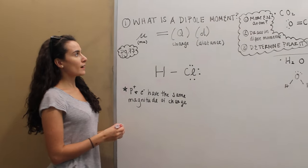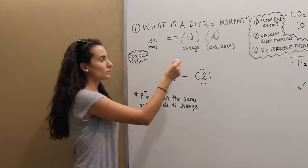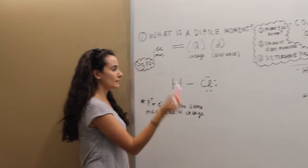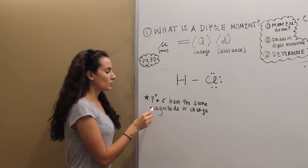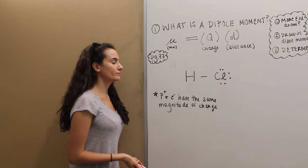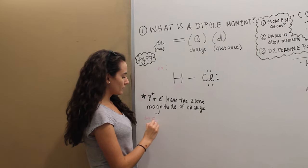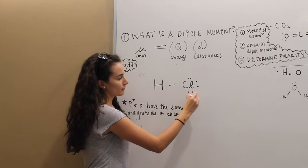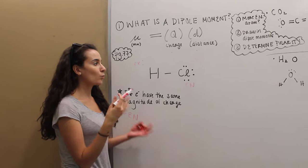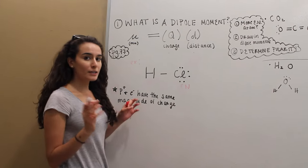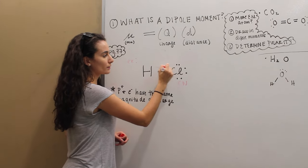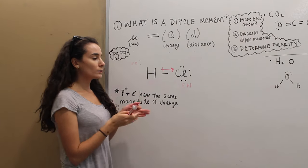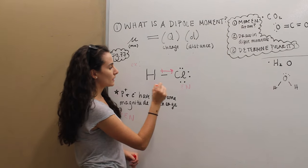On page 77 of our course reader, Dr. LaValle outlines a dipole moment as the Greek letter mu equaling the charge times the distance between the two atoms. But what does that actually mean? We can look at the molecule HCl as an example. An important concept here is that protons and electrons have the same magnitude of charge. Another important concept will be electronegativity. So here, which is the more electronegative atom? Well, we know by our periodic properties that chlorine is the more electronegative of the two. This is important in determining where our dipole moment will be and which direction it will face. We can draw our dipole moment using a vector towards the more electronegative atom — I'm just representing our dipole moment with this vector in red.